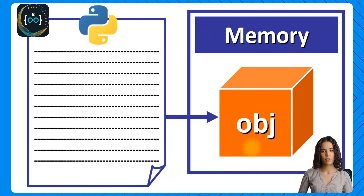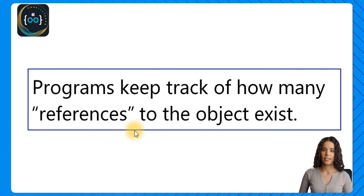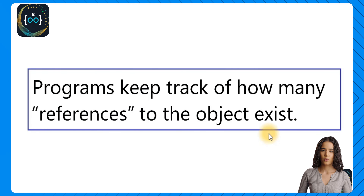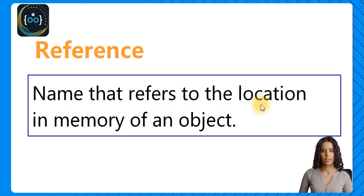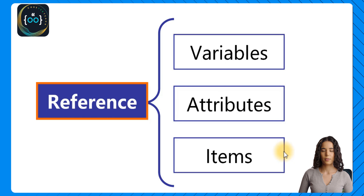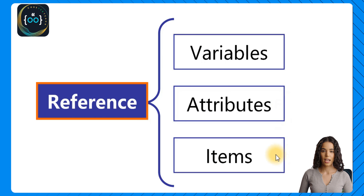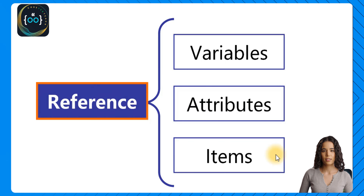Every object you create is stored in memory while the program is running and while the program is able to access that object. Programs keep track of how many references to the object exist. A reference is just a name that refers to the location in memory of an object so we can access it and work with it in our code. Examples of references include variables, attributes, and any other item that references the object and keeps it alive and accessible — such as being part of a list or other data structure.